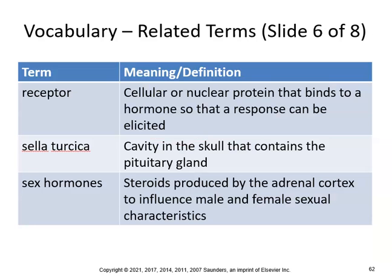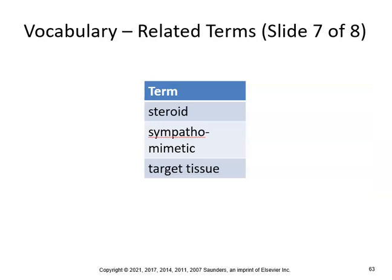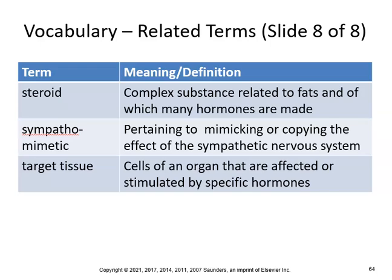A receptor is a cellular or nuclear protein that binds to a hormone so that a response can be elicited. The sella turcica is a cavity in the skull that contains the pituitary gland. Sex hormones are steroids produced by the adrenal cortex to influence male and female sexual characteristics. A steroid is a complex substance related to fats, of which many hormones are made. Sympathomimetic pertains to mimicking the effect of the sympathetic nervous system — your fight or flight. The target tissue is cells of an organ that are affected or stimulated by specific hormones.